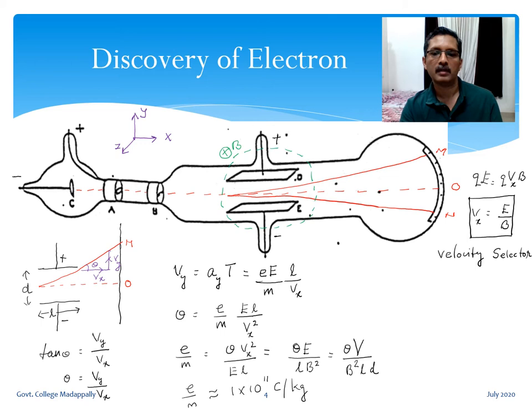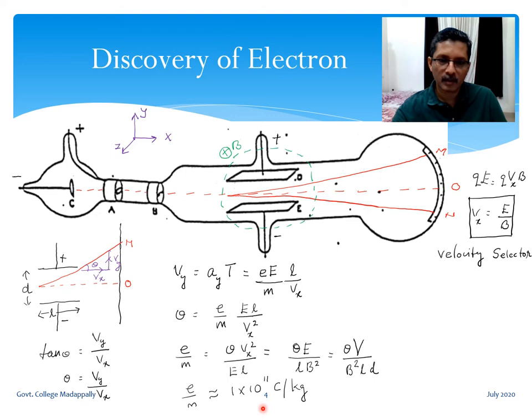In 1897, the value Thomson obtained was approximately 1 × 10¹¹ coulombs per kilogram for the charge-to-mass ratio of the electron.